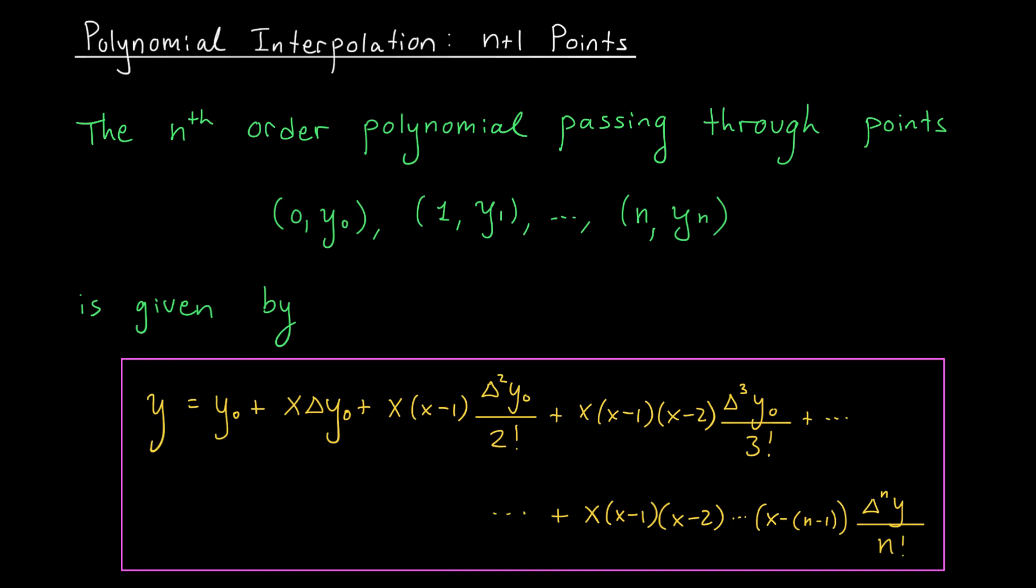Now before we use this beautiful formula in an example problem allow me to make a couple remarks. Firstly, this formula only applies when your data points have x values 0, 1, all the way up to n. We're going to see how to generalize this when you don't have exactly these numbers, 0, 1, up to n, but that will occur in a later video. Secondly, you'll notice that our x values go all the way up to n, right? However, we never actually multiply by the term (x minus n). We stop at (x minus n minus 1). This term does come into play when we compute this last forward difference, but we don't actually have (x minus n) in our expression.